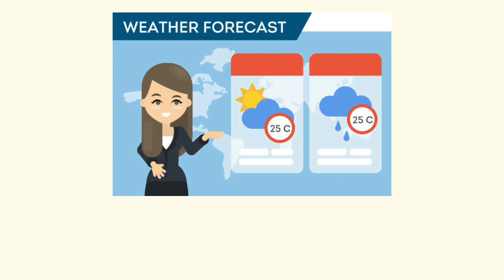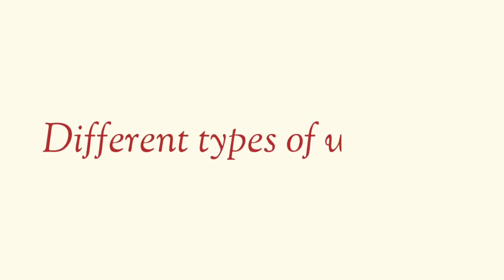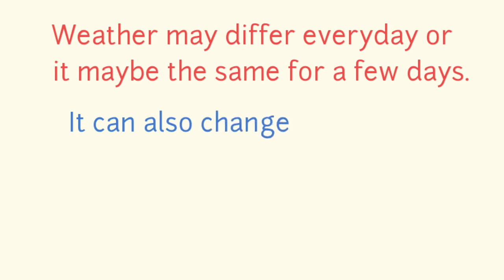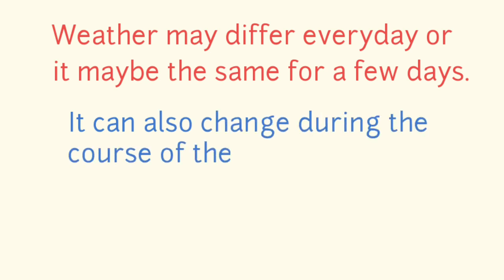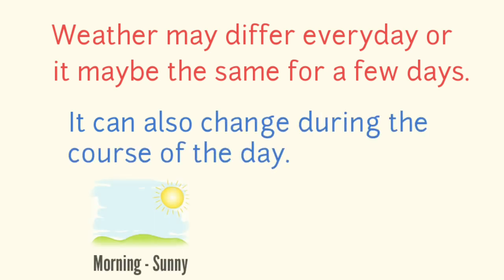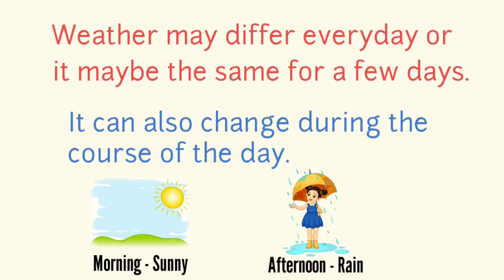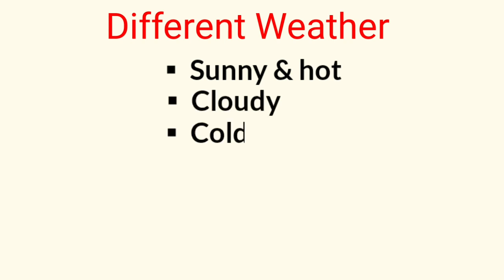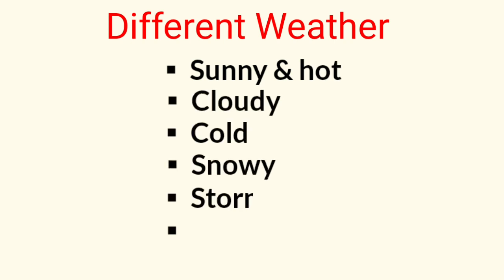Next, let us learn about different types of weather. The weather may differ every day or it may be the same for a few days. It can also change during the course of the day — morning may be sunny and in the afternoon it may rain. So, children, weather may be sunny and hot, cloudy, cold, snowy, stormy, or rainy.